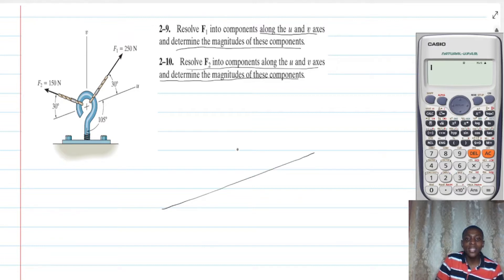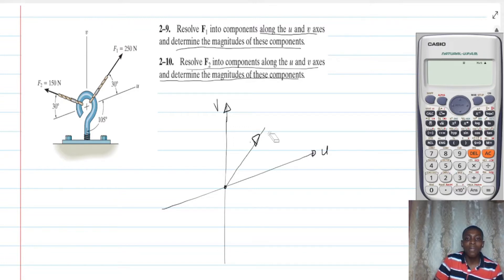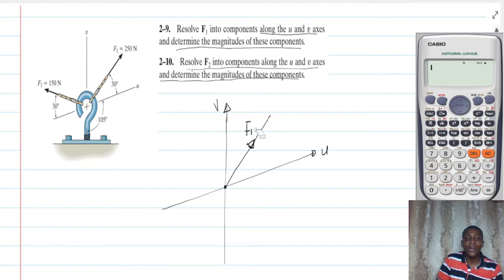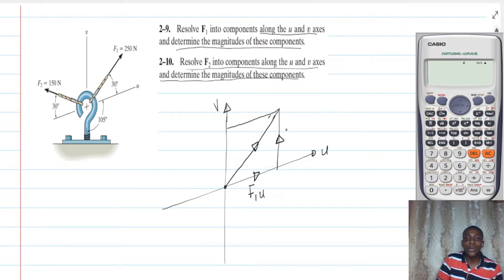Let's say this is the u axis and this is the v axis. I have a force F1 of 250 newtons. To resolve this force, what you have to do is draw a parallelogram to contain the force. So we draw a parallelogram with sides along u and v. This component of the parallelogram we call F1u and this side we call F1v — these represent the components of force F1 along the u and v axes respectively.